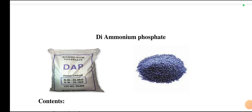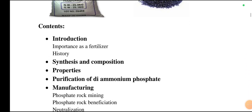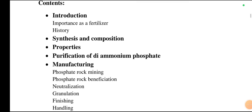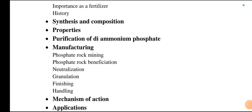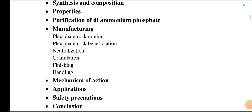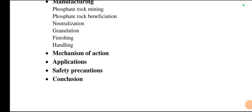Diammonium phosphate is used as a fertilizer in agriculture and in many other industries. The contents of this presentation include: introduction, importance as a fertilizer, history, synthesis and composition, properties, purification of diammonium phosphate, manufacturing — which includes phosphate rock mining, phosphate rock beneficiation, neutralization, granulation, finishing, and handling — followed by mechanism of action, applications, safety precautions, and conclusion.